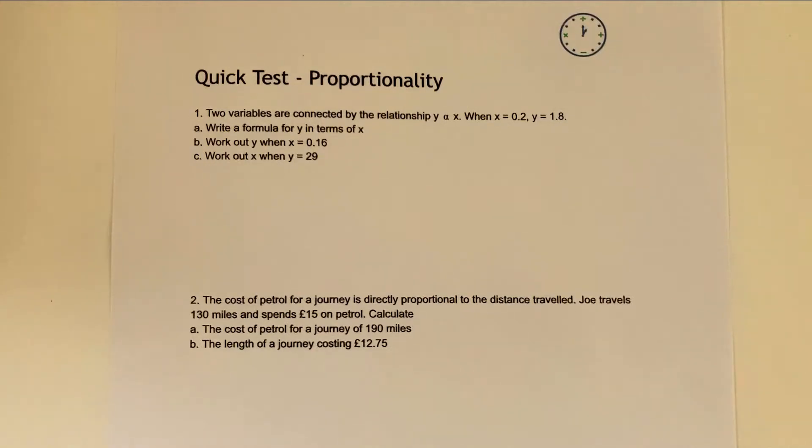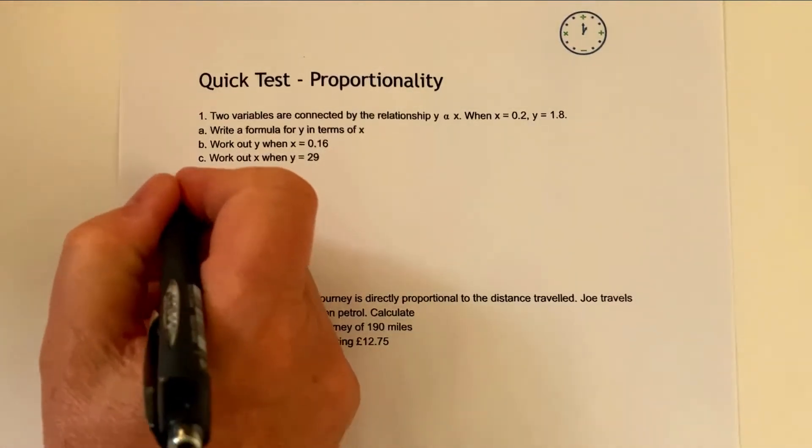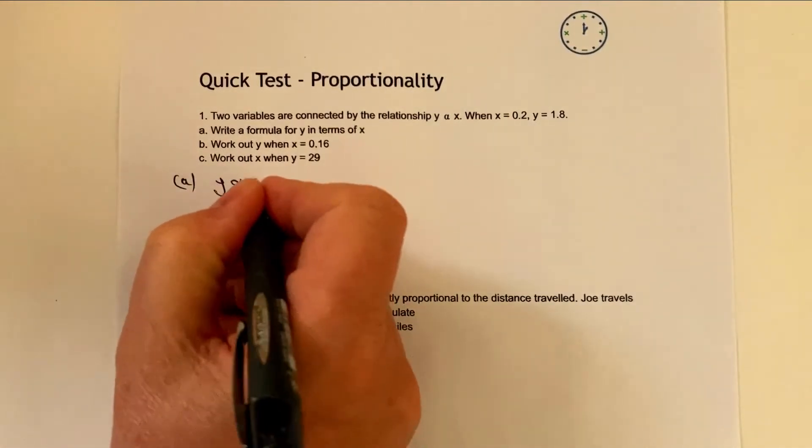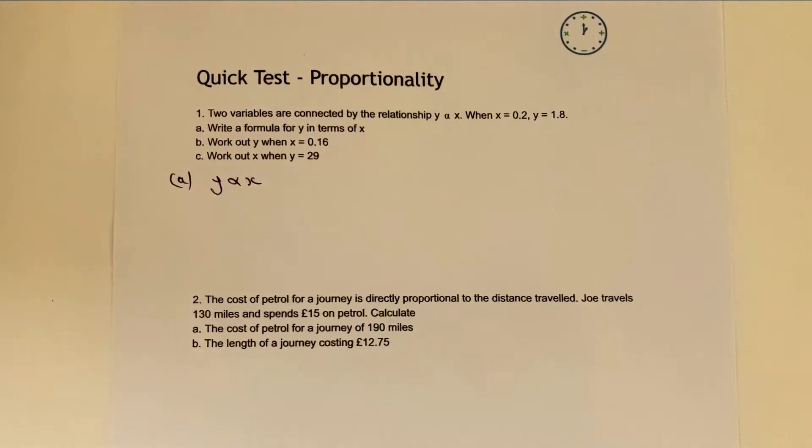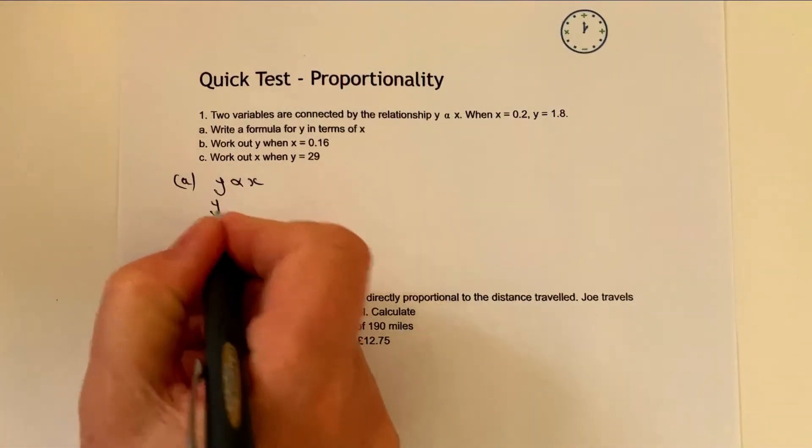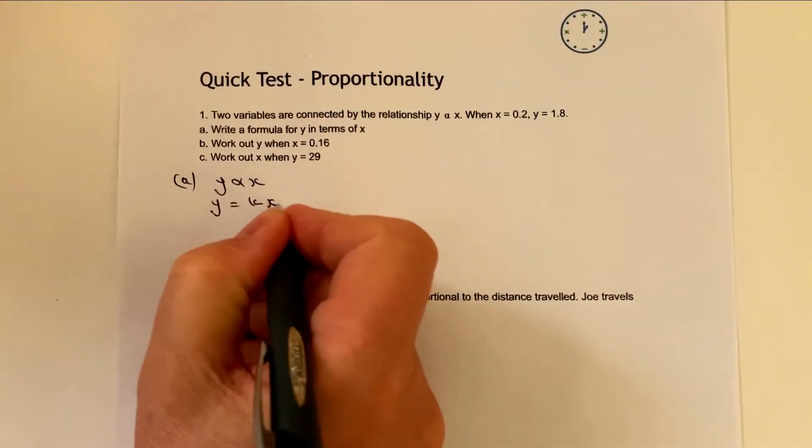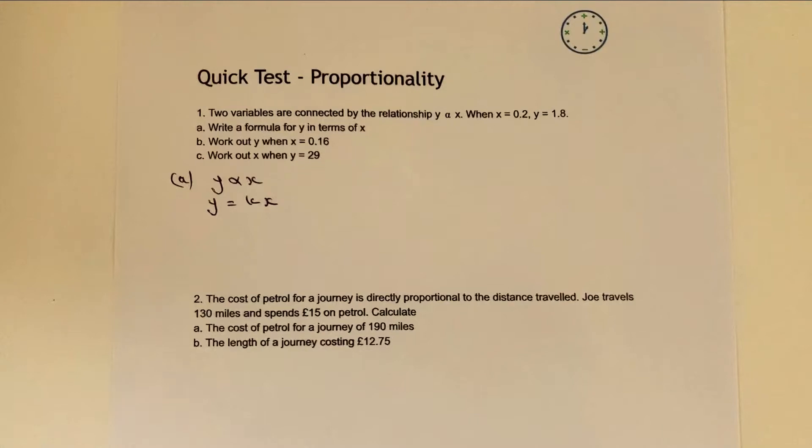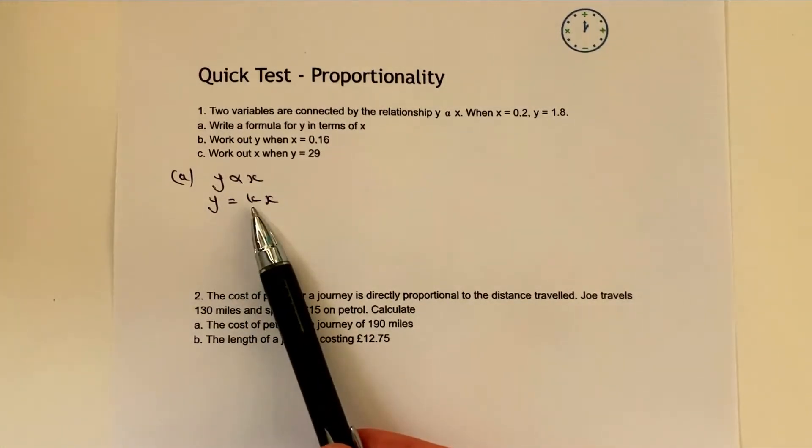Two variables are connected by the relationship when x equals that, write a formula for y in terms of x. So we're going to look at that one first. I'm going to write it as y is proportional to x, because that's our direct proportion relationship. However, we need to then convert that into a formula which is y equals kx. And really what we've got to do is find this value of k.